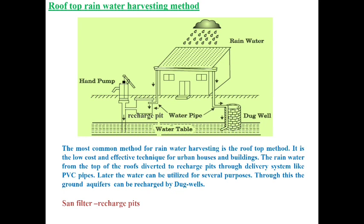If we do not utilize the water from the recharge pit, it can be passed over to the dug well. By this process, the groundwater level is raised over time. The recharge pit consists of sands and gravels which act as a natural sand filter. Once rainwater is diverted through two channels — one to the recharge pit and another to the dug well — we can utilize water currently and also recharge the groundwater level.